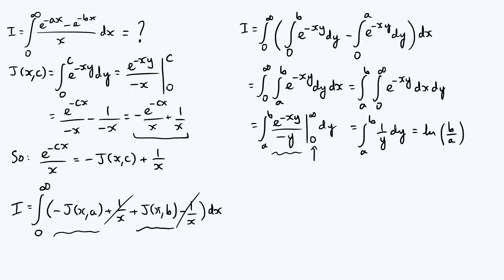I'd like to conclude by considering one particular special case of interest. If you're a mathematician who likes rigorous proofs, you're not going to like what I'm about to do — I'm not claiming this is an actual proof, just an interesting observation. Consider the case where a = -i (the imaginary unit) and b = i. We've already broken the assumption that a and b are positive numbers, so we haven't proved that ln(b/a) should work here, but let's just see what happens.